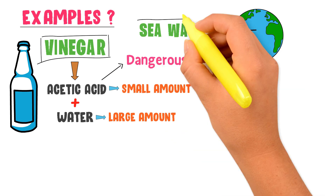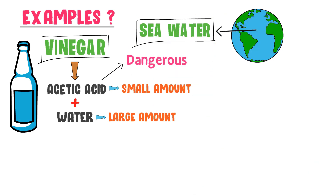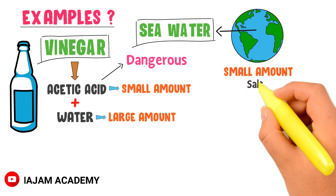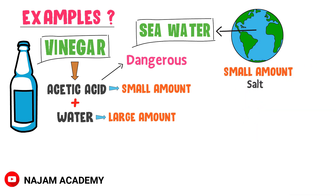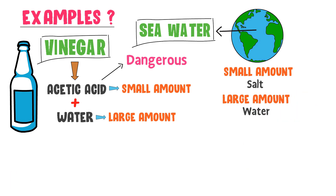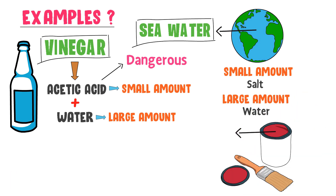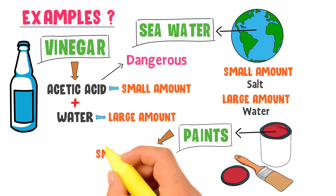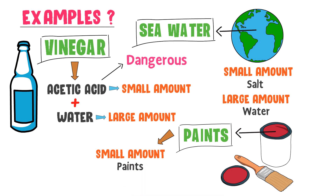Secondly, seawater is an example of Dilute Solution because it contains a small amount of salt as a solute and a large amount of water as a solvent. Thirdly, paints are an example of Dilute Solution because a small amount of paint as a solute is dissolved in a large amount of solvent like petroleum.